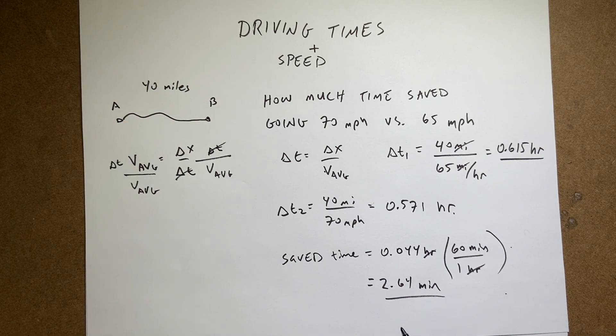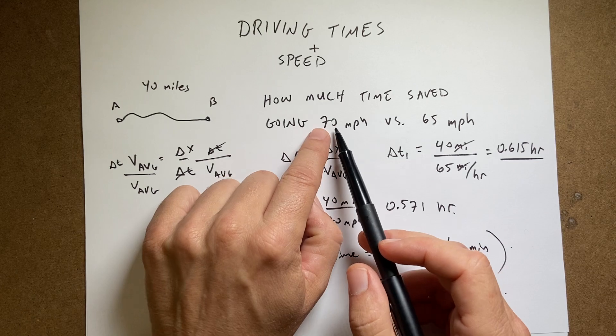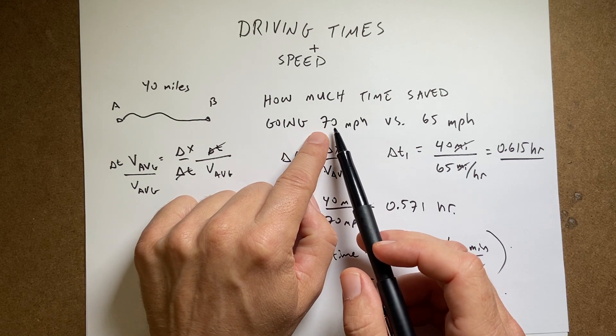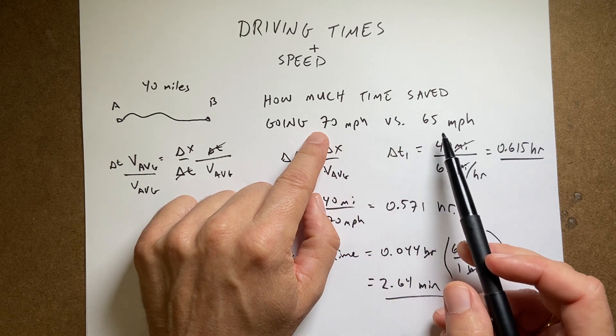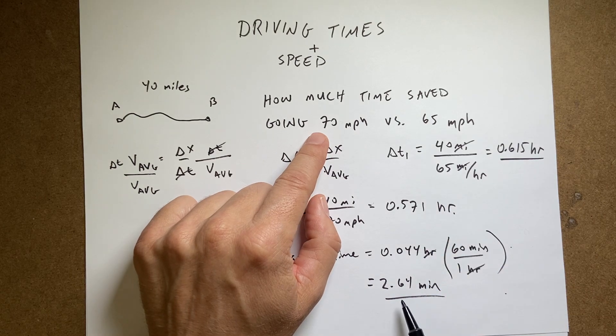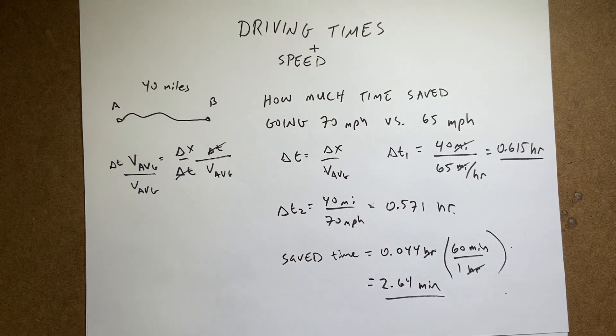And there you go. So that isn't a whole lot of time. And you can compare, you could do other times. I wouldn't do over 70 because it's illegal. But that's not a lot of time to save. So if you want to drive 65 miles an hour instead of 70, it's like one extra song, right? Not a big deal.